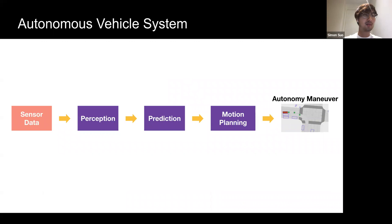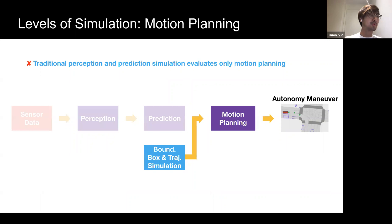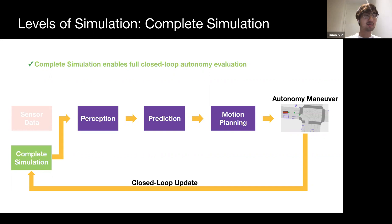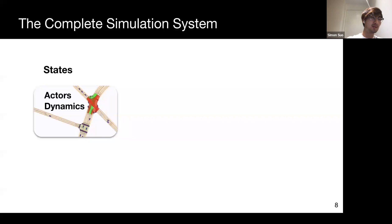Let's review the SDV system and how we can inject simulation for evaluating it. An SDV ingests sensor data, perceives and predicts agent behaviors, and plans a safe path. Traditional simulators only simulate bounding boxes and trajectories, enabling only motion planning evaluation. This is the typical industry approach due to low overhead, but it assumes the self-driving stack is modular—which is not always the case—and just uses actor dynamics for traffic simulation. End-to-end closed-loop testing of the full autonomy system requires going much further: we need a complete simulation system that models the real world accurately.